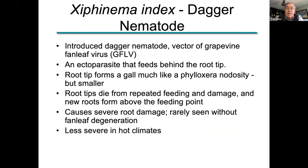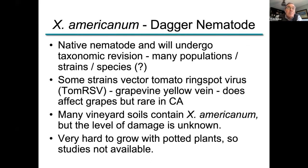Americanum is found in almost all soil samples, so you have to be careful when you've tested for index versus americanum and keep them separate — americanum causes some damage to the plant but no vectoring of fanleaf virus. It vectors other viruses, not so much in California. It's a fairly damaging nematode all by itself and can really chronically limit growth and stunt the plant, though it doesn't feed on older roots so the decline is not quite as precipitous as with phylloxera. The americanum complex is now thought to be many species, not just Xiphinema americanum. They definitely vector tomato ringspot virus and a few similar viruses. Most soil samples contain it, which has made it difficult to define what level of damage is associated with it, and it's also very hard to grow in potted vine situations — so it's really hard to study.